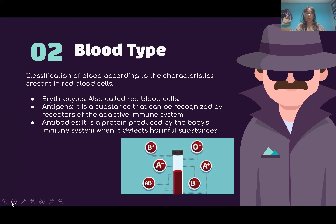Blood type is really helpful in forensic science because it lets you know things about human blood from the inside. You get to know if the blood type is A, B, AB, or O, and you also get to know the RH type, which can be positive or negative.